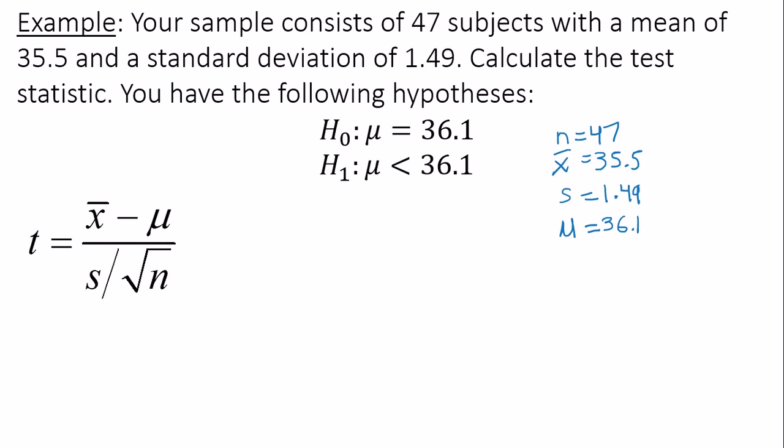Plug in these four values into the test statistic formula. So you will have 35.5 minus 36.1 divided by 1.49 divided by the square root of 47.